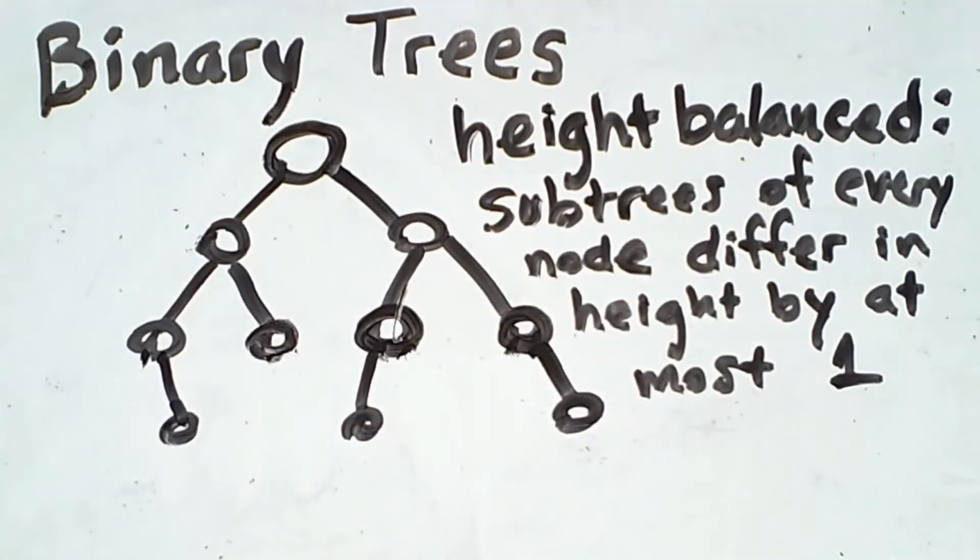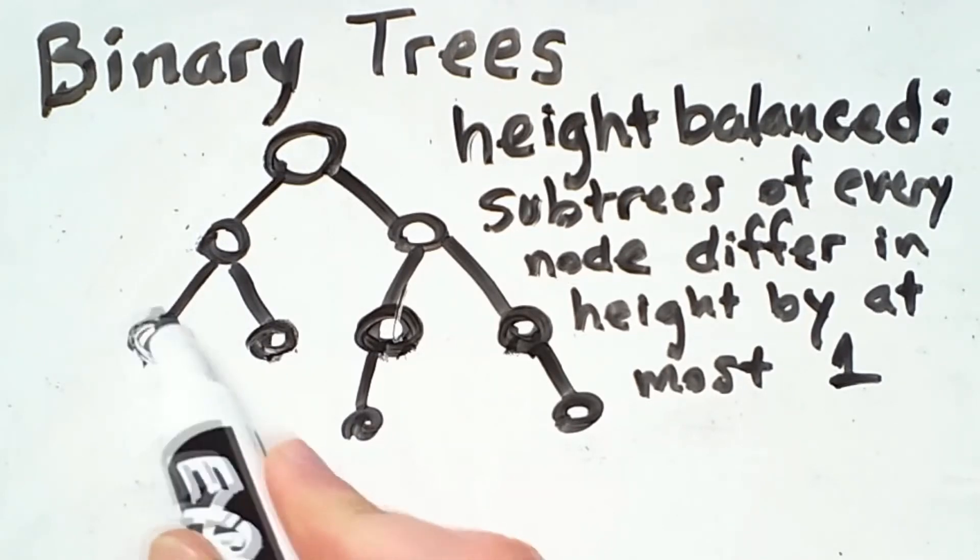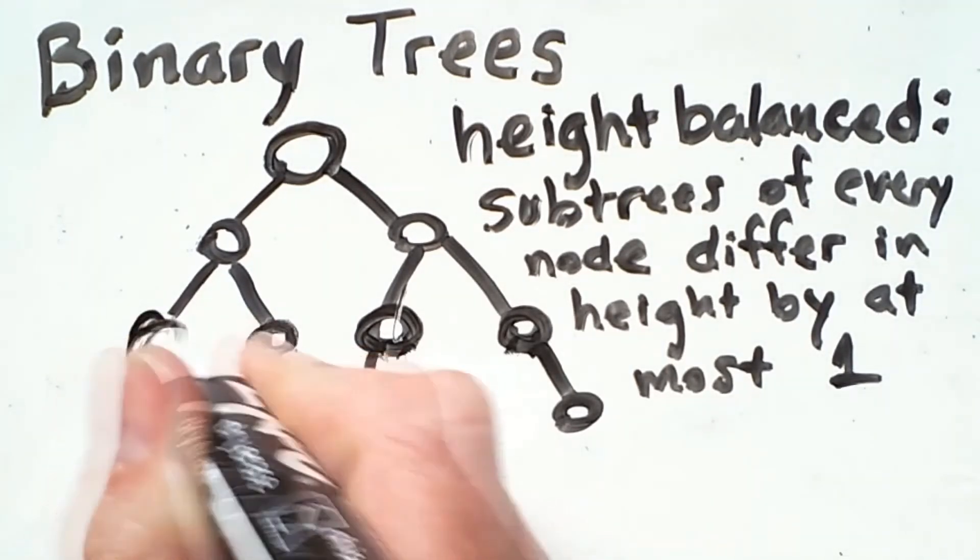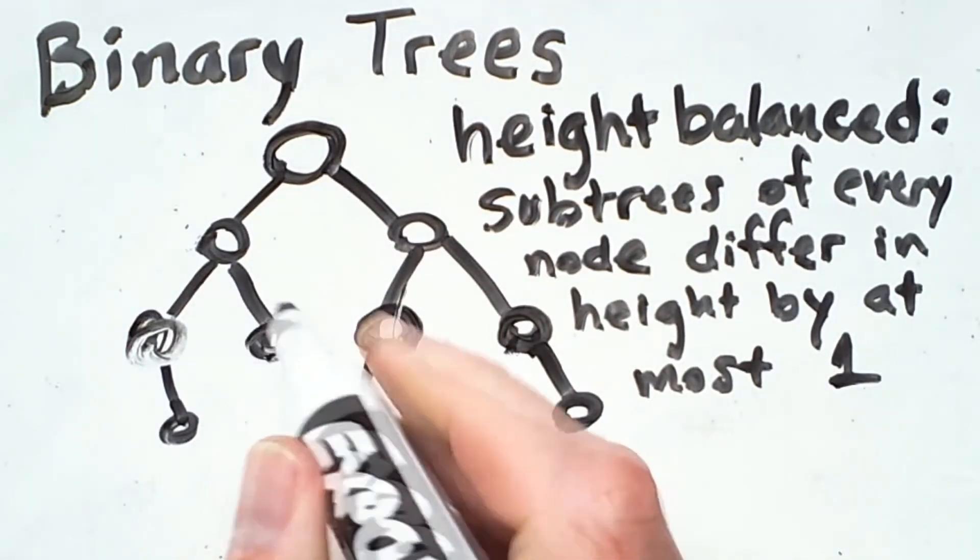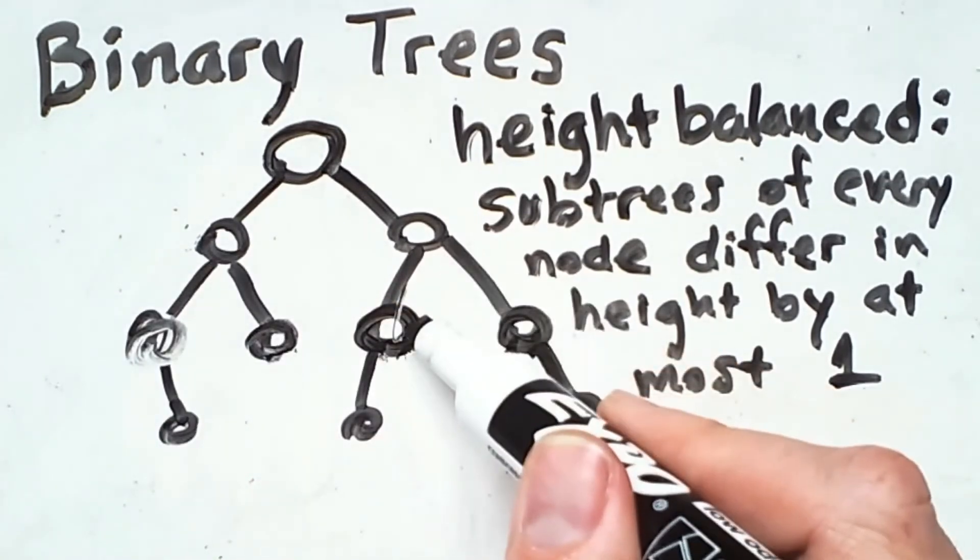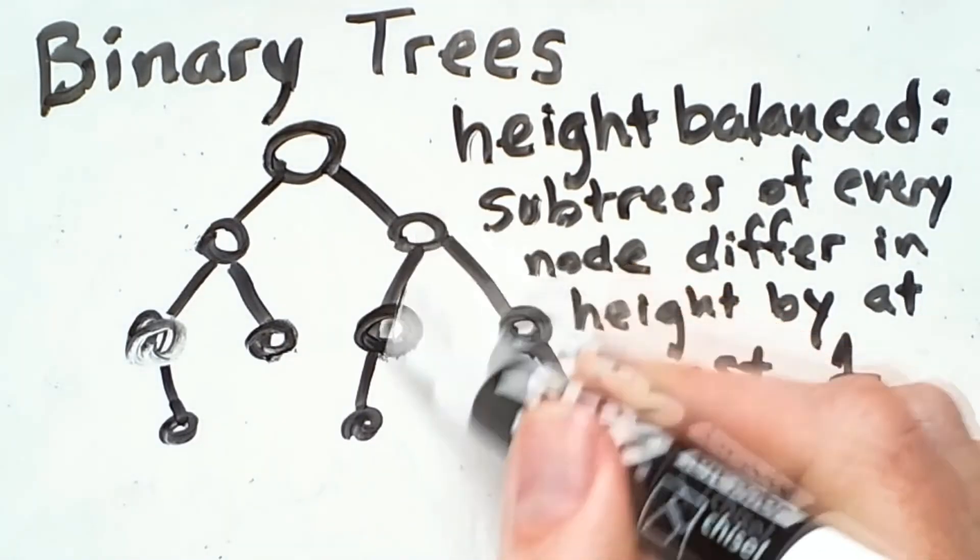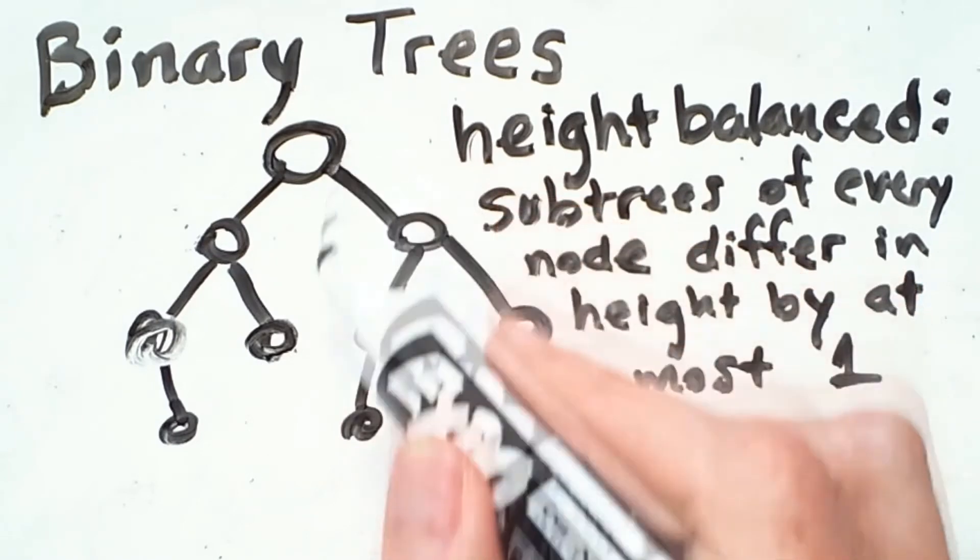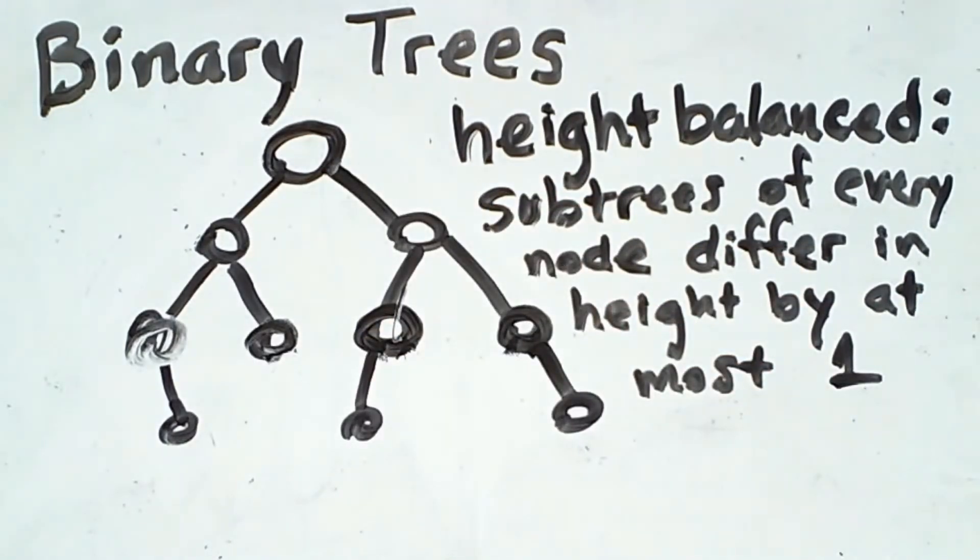So let's just verify this. This node has two subtrees of height 0. This node has subtrees of height 0 and 1. This one has subtrees of height 0 and 0. This node has subtrees of height 2 and 1. This node 1 and 0, 0 and 1, this node 2 and 2. And then the root has subtrees of height 3 and 3. So there's a greater variety of trees that are considered height balanced.